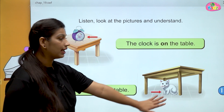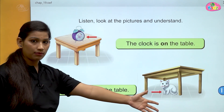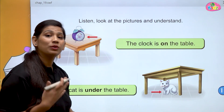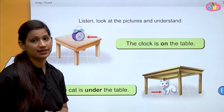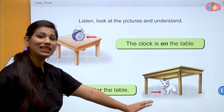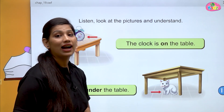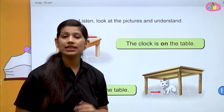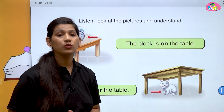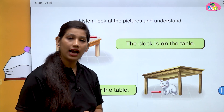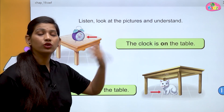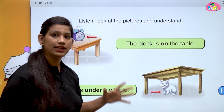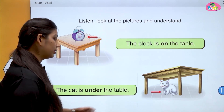Here you can see the cat and the table. The table is the same but the cat is not on the table — cat table ke ooper nahi hai. Agar ooper hoti toh hum 'on' use karte. Lekin cat ab table ke neche hai. Neche ke liye hum use karte hain: under. The cat is under the table. Koi bhi cheez agar kisi cheez ke neche hai toh hum us ko bolte hain under. On = ooper, under = neche.